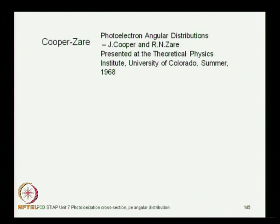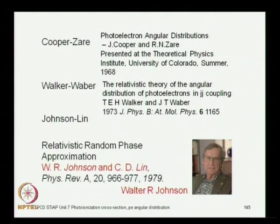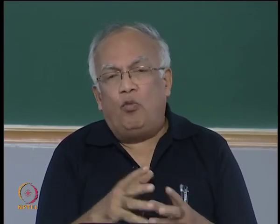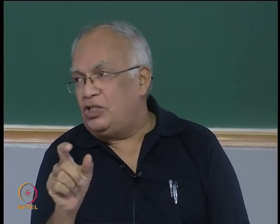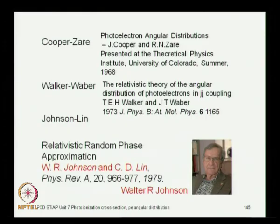The essential references are: the classic Cooper-Zare paper (uploaded to the course web page), Walker and Weber for the relativistic formula, and Johnson and Lin for the relativistic random phase approximation which includes electron correlations and gives the expression for the angular distribution asymmetry parameter. The Cooper-Zare formula for the angular distribution of photoelectrons and unit 7 are now concluded.